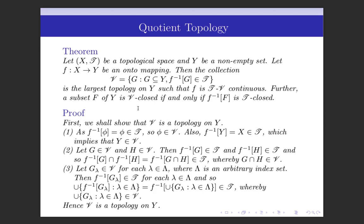The theorem states that: let X, T be a topological space and Y be a non-empty set. Let F be an onto mapping from X to Y. Then the collection V, consisting of all those subsets of Y whose inverse image under F belongs to T, is the largest topology on Y such that F is T-V continuous. Further, a subset F of Y is V-closed if and only if the inverse image of it under F is T-closed.